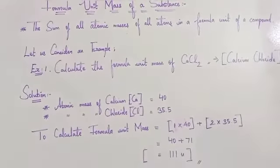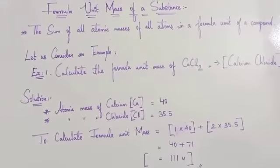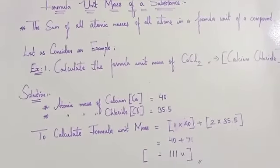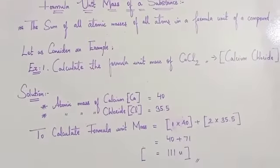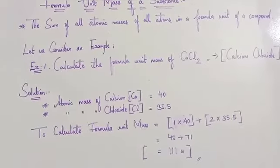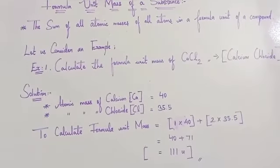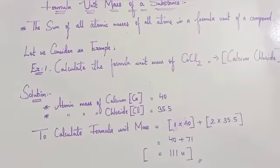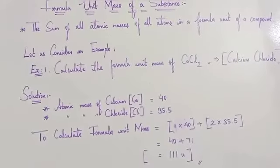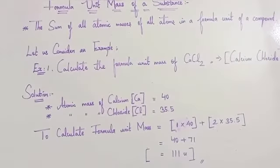That is 40 and 35.5. So to calculate the formula unit mass, we are going to add both the atomic masses of calcium and chloride. But before that, we have one atom of calcium, so we are multiplying 1 into 40.